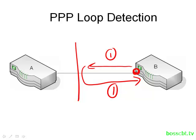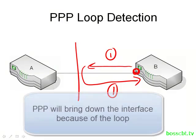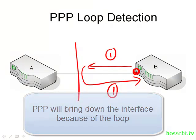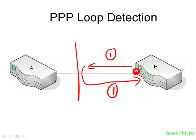Not only does the router detect the loop, but the action it takes is to shut down that interface. This is very helpful because it's not always obvious to a network administrator or a monitoring platform to detect a loop. They're eventually found, but they can be really hard to detect sometimes. So this is an invaluable feature of PPP.